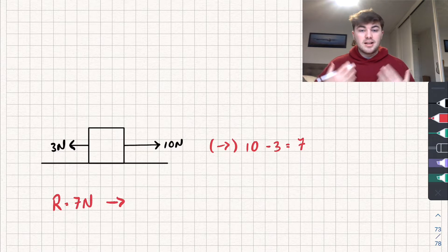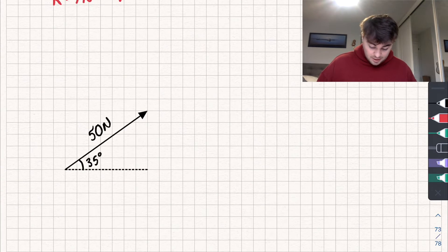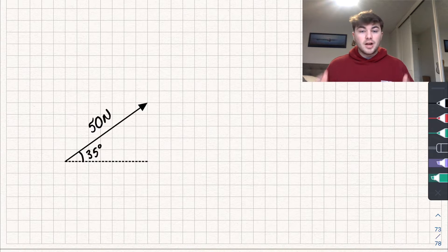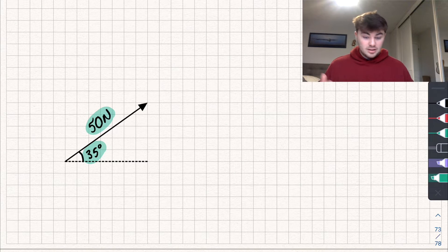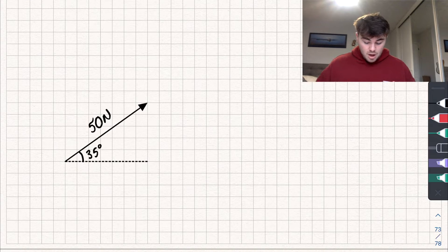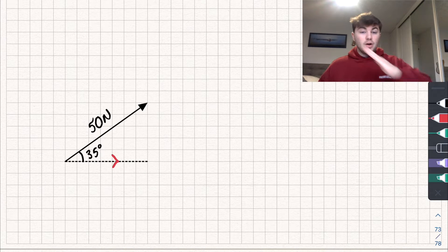You're not going to get an exam question that's just horizontal and vertical — you'll get more complicated forces. Here we have a force of 50 newtons acting at 35 degrees to the horizontal. Forces are vector quantities, which means they have a magnitude (or size) and a direction. In this case the magnitude is 50 newtons and it's acting at 35 degrees to the horizontal. To find the resultant with another force acting straight down, we split this force into its horizontal and vertical components. Horizontally, the force acts to the right.